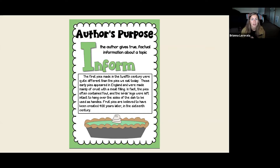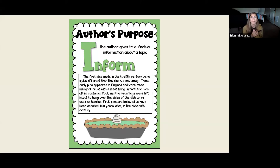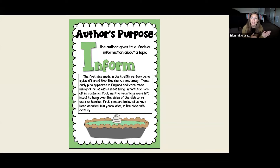'Fruit pies are believed to have been created about 400 years later, in the 16th century.' So we're learning about two different types of pies — back then they filled pies with meat and kept the bird's legs attached to use as handles. But today most of us don't make pies like that. About 400 years later, fruit pies were implemented, and those are the pies most of us are familiar with — like grandma's cherry pie. In this given text, we just learned whole new information about the difference between pies back in the day and pies today.